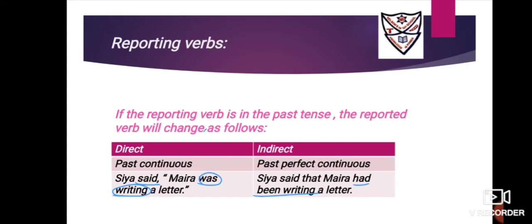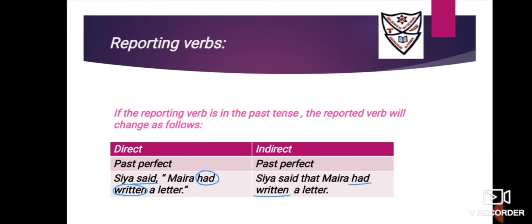Next category: if the reporting verb is 'said' and the reported verb is in past continuous tense, change it to past perfect continuous. Example: 'Siya said, Myra was writing a letter.' Underline 'said,' circle 'was writing.' 'Was writing' (past continuous) changes to 'had been writing' (past perfect continuous). Answer: 'Siya said that Myra had been writing a letter.'